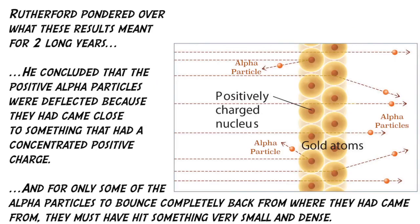Rutherford pondered over what these results meant for two long years. He concluded that the positive alpha particles were deflected because they had came close to something that had a concentrated positive charge. And for only some of the alpha particles to bounce completely back from where they'd came from, they must have hit something very small and dense.